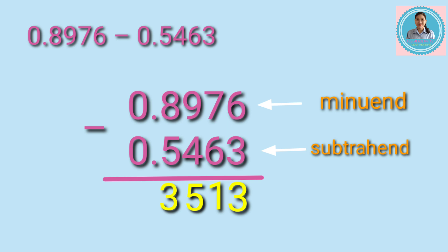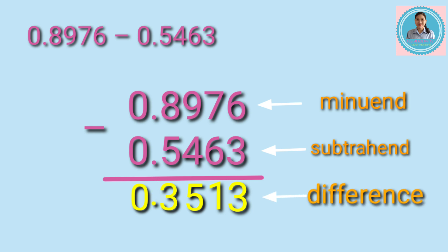7 minus 6 equals 1, 9 minus 4 equals 5, and 8 minus 5 equals 3. Since there are no whole numbers to be subtracted, we write zero and then put the decimal point in the difference just below the decimal point of the minuend and subtrahend. So the difference is 3.5131 ten-thousandths.